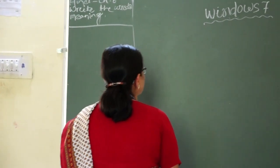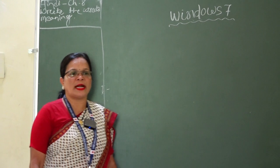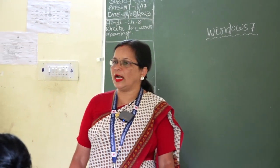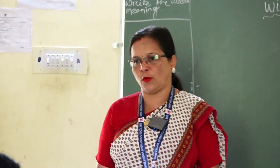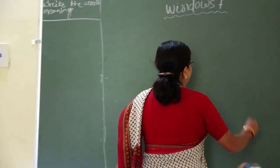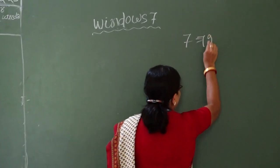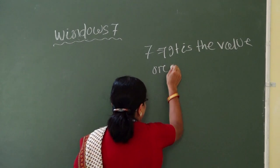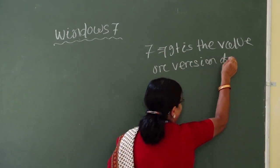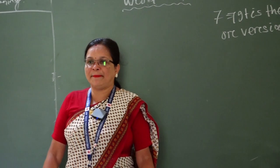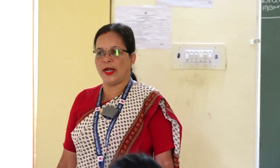So first we will discuss what is Windows. A picture that appears on a screen in a rectangular area is known as Windows. So what is Windows 7? Windows 7 means 7 is the value or version of Windows.